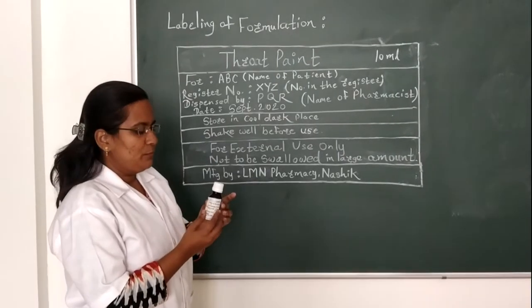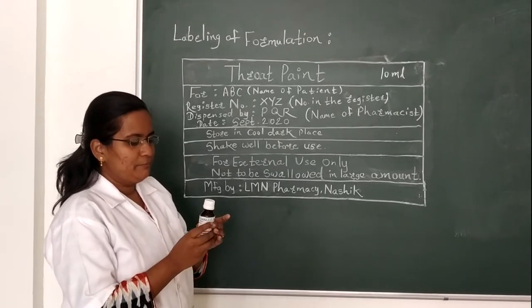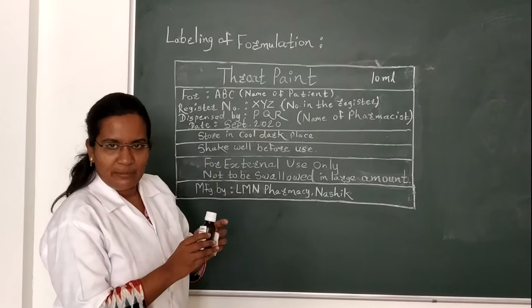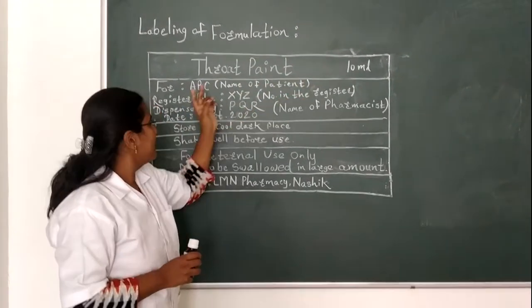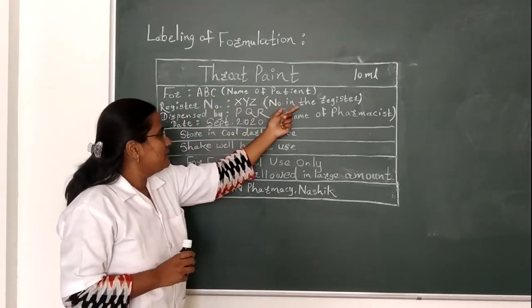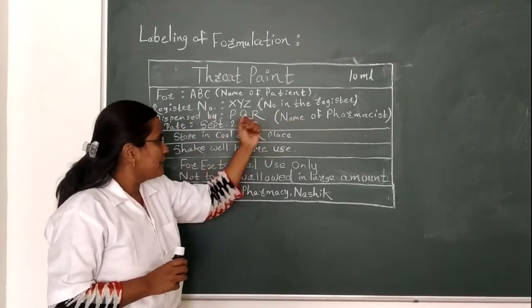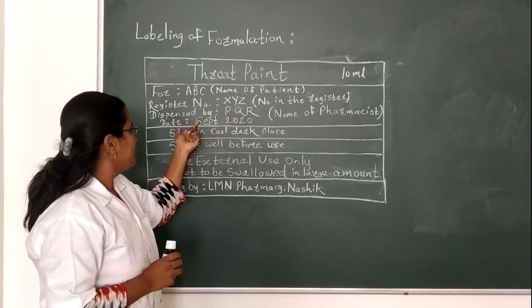Now let's move for labeling. As we fill our formulation into this colored bottle, we also prepare the label. See the label - Treatment for ABC (here one can write patient name), register number XYZ, dispensed by PQR (name of pharmacist), date September 2020, this is the manufacturing date.